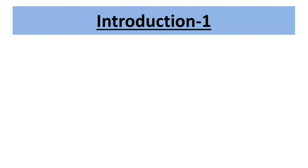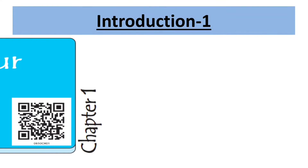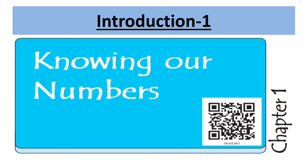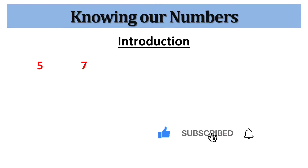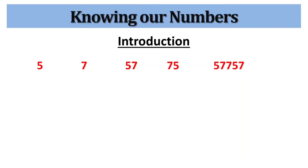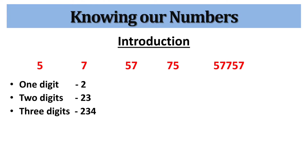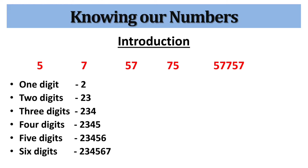Hello friends, this is Neelima from NJ Classes. Welcome to the first introduction session of Class 6, Chapter 1: Knowing Our Numbers. Students, you are familiar with numbers and digits. Here we have numbers 5 and 7 — both are single-digit numbers. Combining these numbers we get the two-digit number 57 or 75. Repeating digits gives many numbers, for example 57, 757.